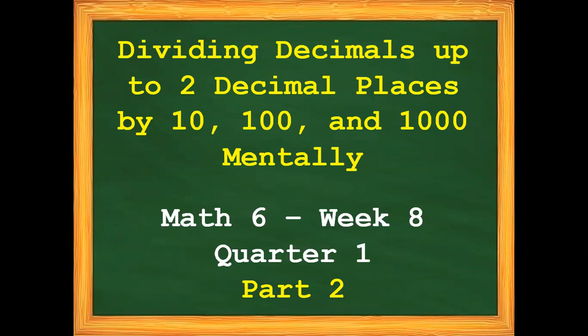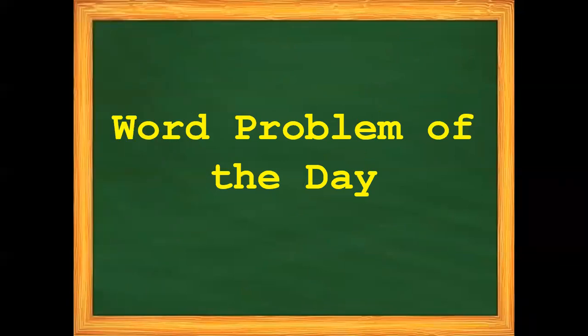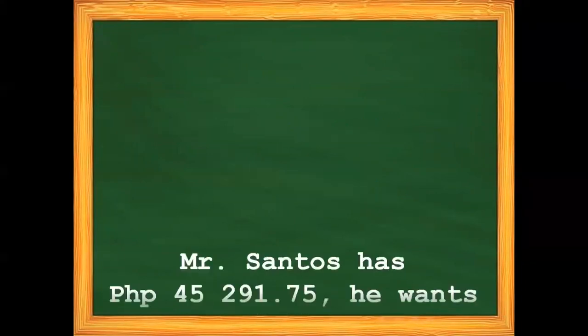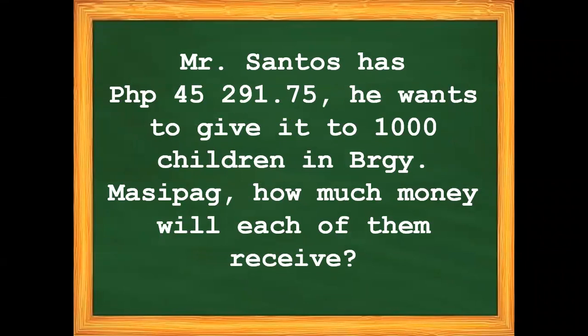And to start our lesson, let us first have our word problem of the day. Mr. Santos has ₱45,291.75. He wants to give it to 1,000 children in Barangay Masipag. How much money will each of them receive?